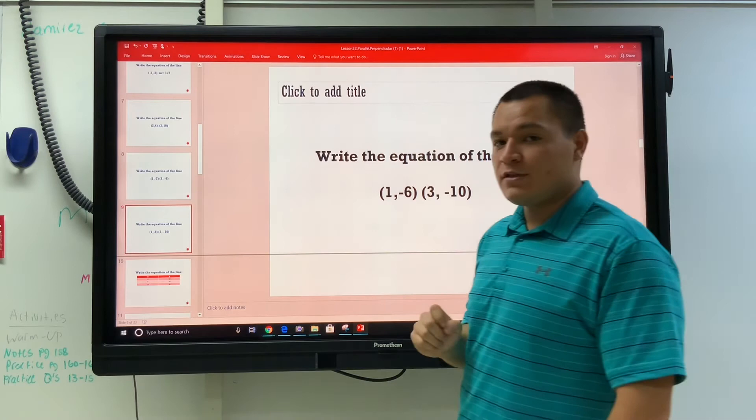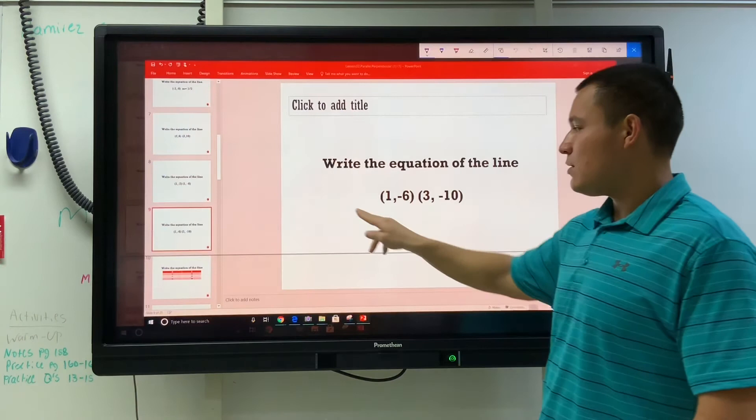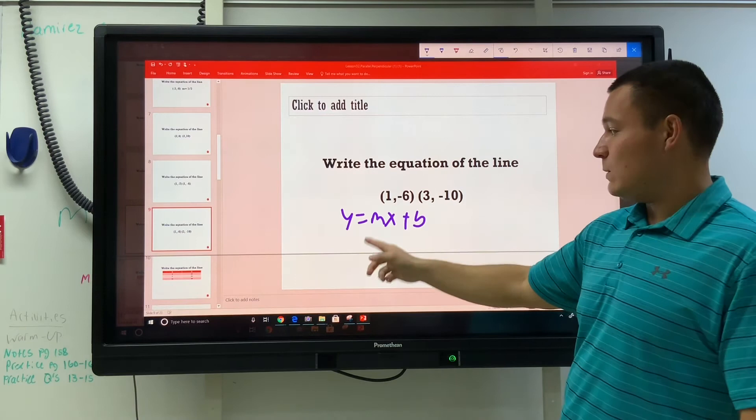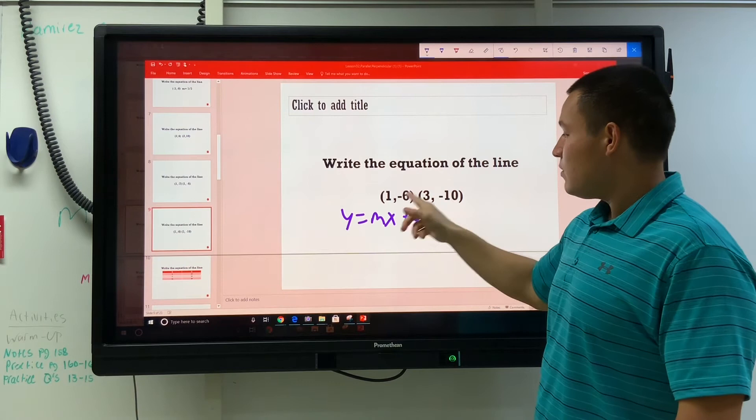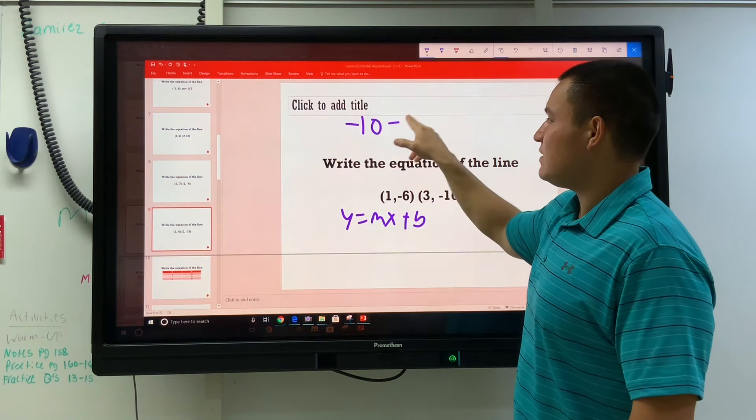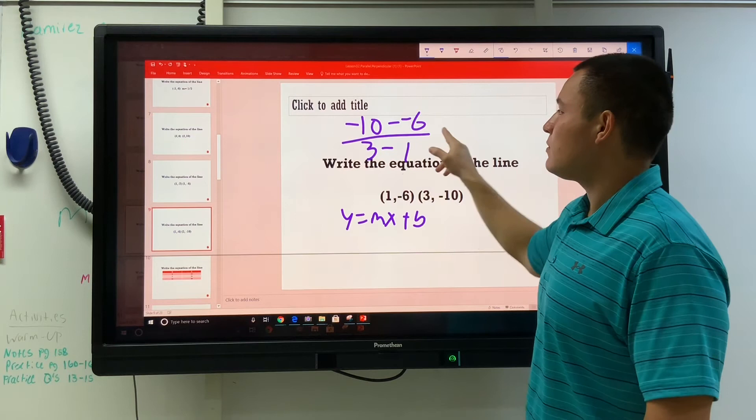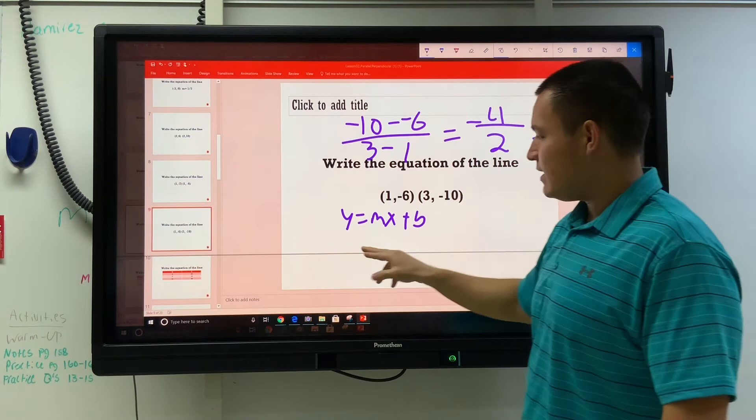We'll do two more review questions. This one and one more. Write the equation of the line that goes through these two points. We need to do y equals mx plus b. To do this, we need m and we need the y-intercept. First, to find the y-intercept, we need to find m. So we'll do the y's subtracting. There's no easy way to do it. So I'll do negative 10 minus negative 6 over 3 minus 1. That makes negative 4 over 2, which is negative 2. That's the m. y equals negative 2x plus b.